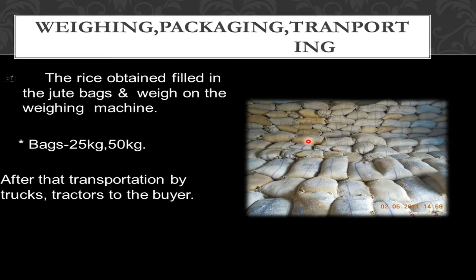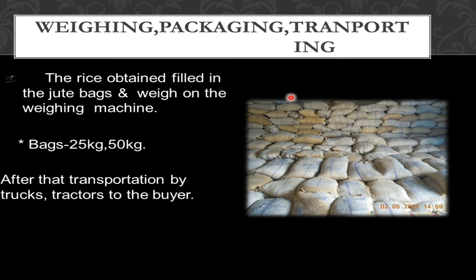The final step is weighing, packaging, and transporting. The rice obtained is filled in jute bags and weighed on a weighing machine. Bags are 25 to 50 kg and after that transportation is done by trucks and tractors to the buyers. The quantity depends on the supplier and the buyer.